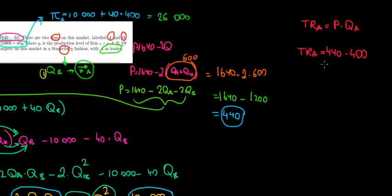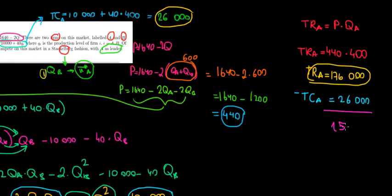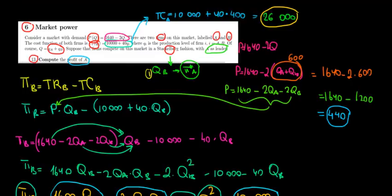440 times 400 equals 176,000. So total revenue of player A is 176,000 euros, and total cost of player A is 26,000 euros. Subtracting: 176,000 minus 26,000 gives us 150,000 euros in profit for player A, the leader. That answers the question.